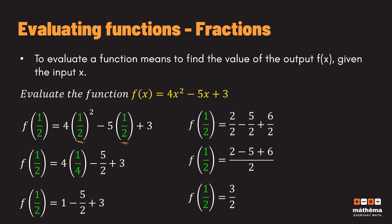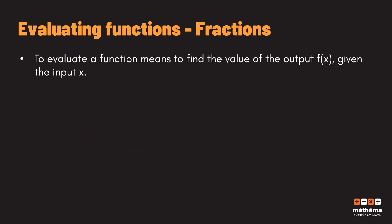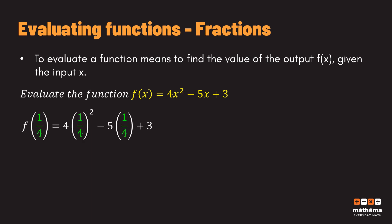So again, f(1/2) is equal to 3/2. Next example: we are going to use the same function f(x) = 4x² - 5x + 3, but this time our x is one fourth. We substitute all x variables with one fourth, giving us f(1/4) = 4 times (1/4)² minus 5 times (1/4) plus 3.